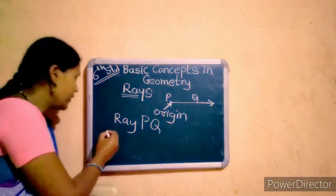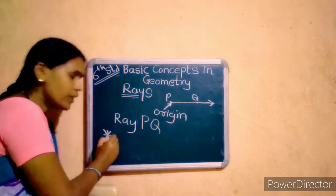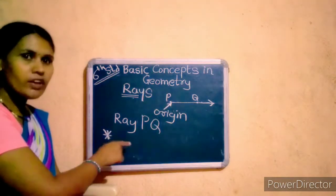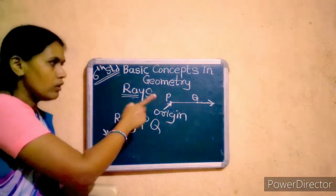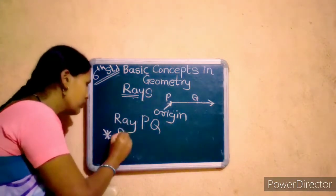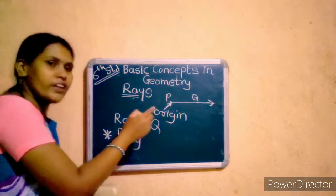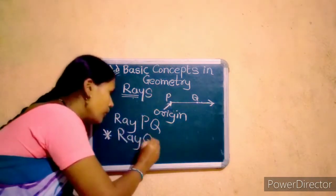And the very important point is, this is very important about ray. We cannot read this ray as ray QP.